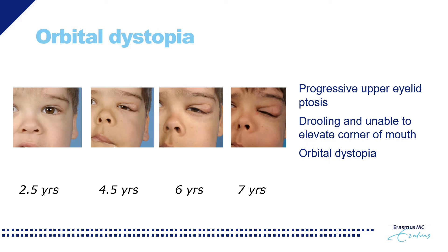This case illustrates orbital dystopia in a typical way that we encounter in patients with neurofibromatosis. As you can see, over the years this child has developed a progressive ptosis of the upper eyelid due to the progression of neurofibromatosis in the upper eyelid. During that same period he lost the ability to elevate the corner of his mouth, resulting in drooling. The orbit also became displaced downward, referred to as orbital dystopia.